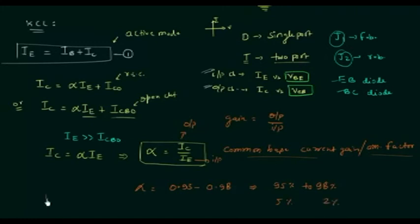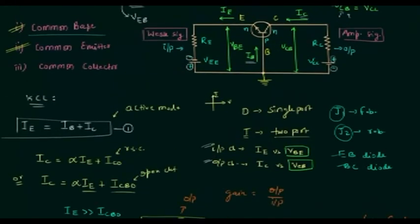And the base current IB is equal to (1 - alpha) times IE. So these are the important relations that you must note down. In the next lecture I will explain how to obtain the input characteristics in the case of common base transistor configuration.